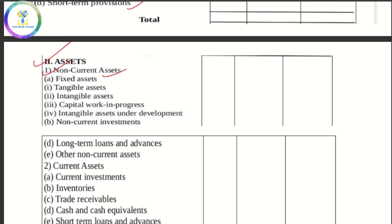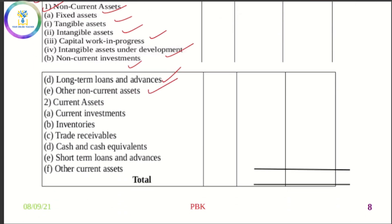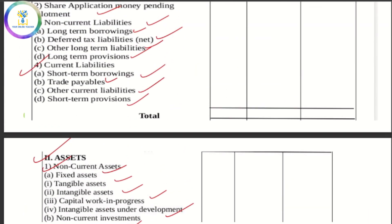Non-current assets include fixed assets — tangible, intangible, capital work in progress, and intangible assets under development — as well as non-current investments, long-term loans and advances, and other non-current assets. Current assets include current investments, inventories, trade receivables, cash and cash equivalents, short-term loans and advances, and other current assets.